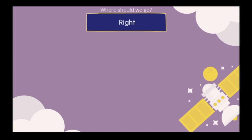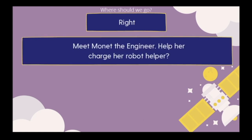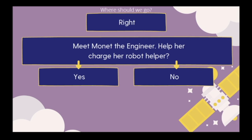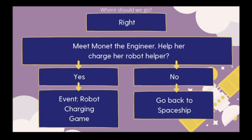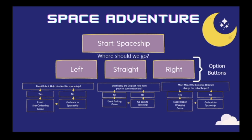Lastly, for the right option, we're going to meet Monet the engineer, and she'll ask us to help her charge her robot helper. You can say yes or no. If you say no, we go back to the spaceship. If you say yes, there's a new event called the robot charging game, where we help charge her robot to 100%. After that we go back to the spaceship. This is the full state machine for our space adventure.